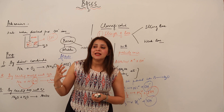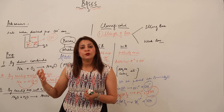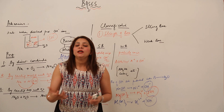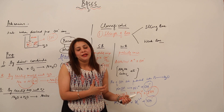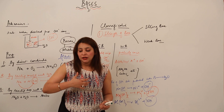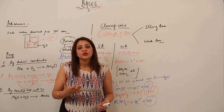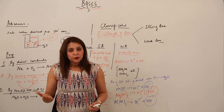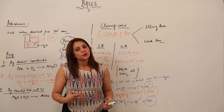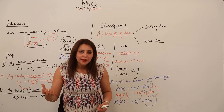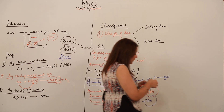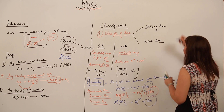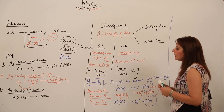Just as with acids — where we had concentrated acid and dilute acid based on water content — likewise we have concentrated base and dilute base. A base which contains more water is called a dilute base, and one which contains less water is called a concentrated base.